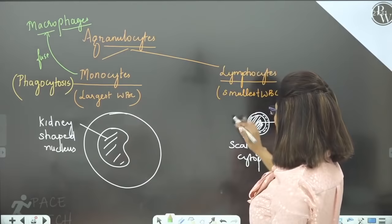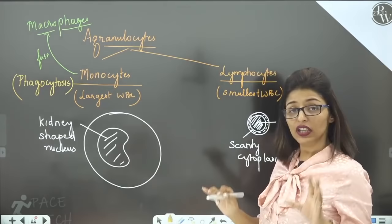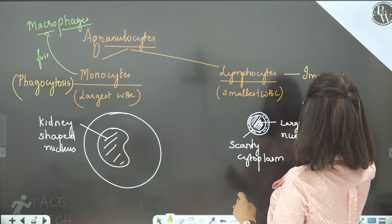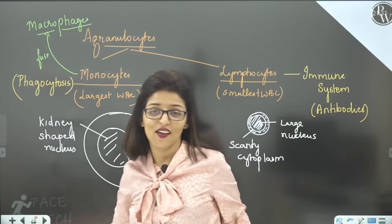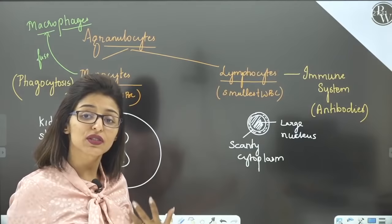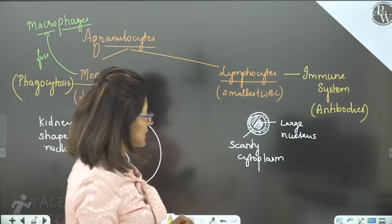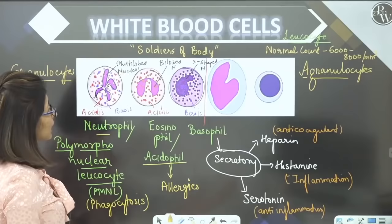Lymphocytes do tarah ke ho sakte hain — B lymphocytes aur T lymphocytes. Yeh humara immune system banate hain, antibodies banayenge. Total WBCs ka normal amount 6,000 to 8,000 per mm cube (NCERT); otherwise 4,000 to 10,000 bhi normal maante hain.